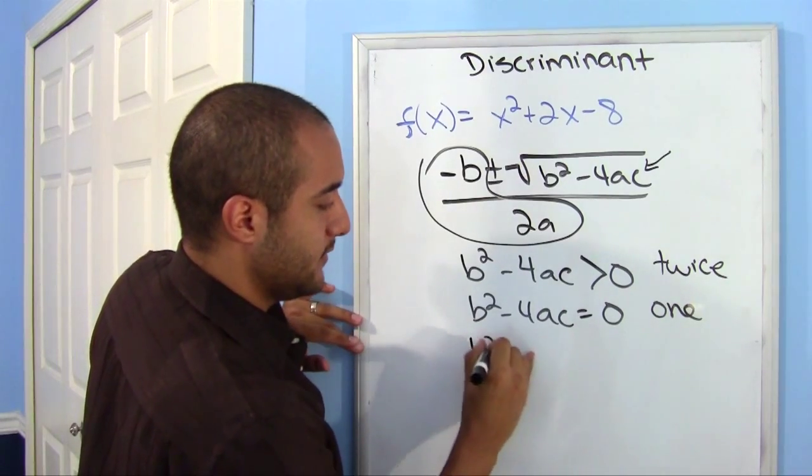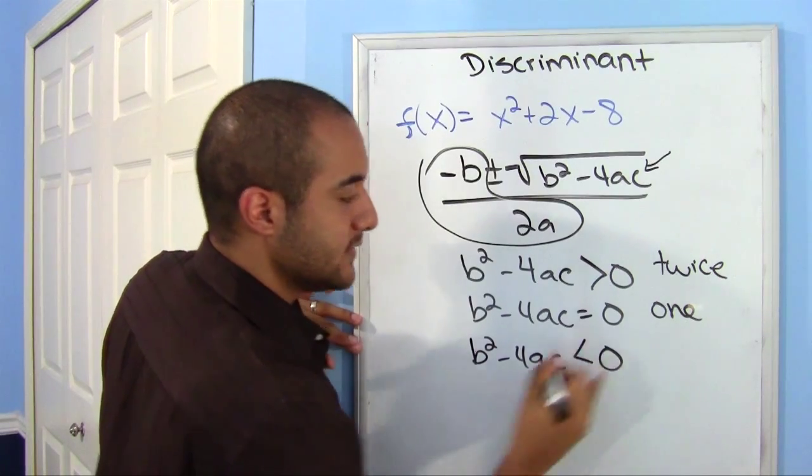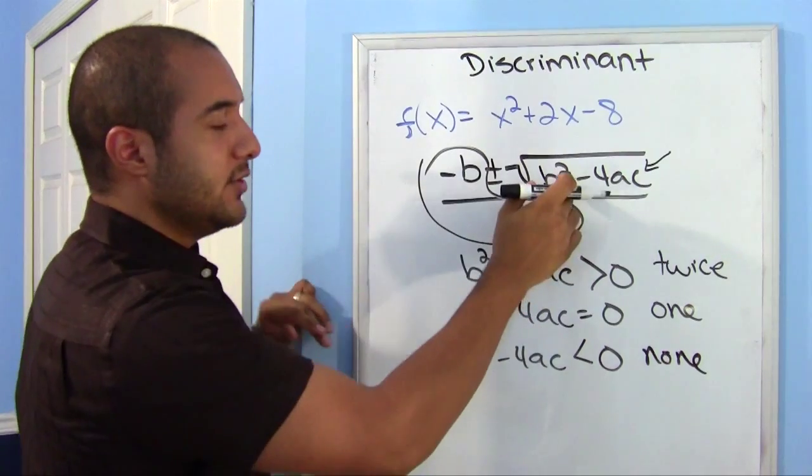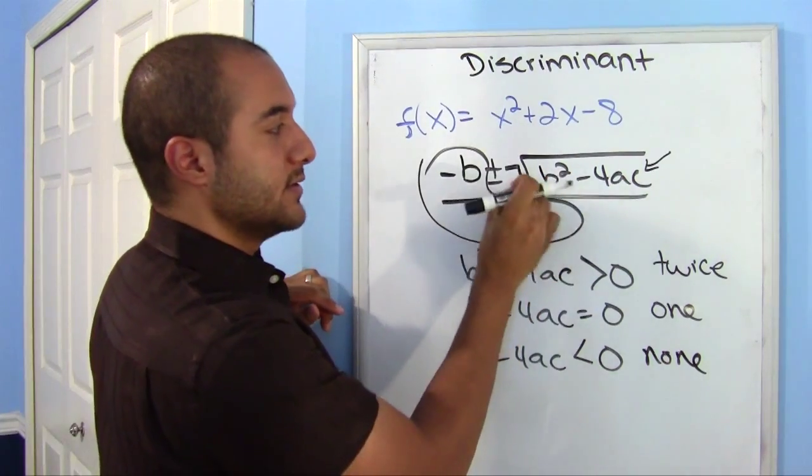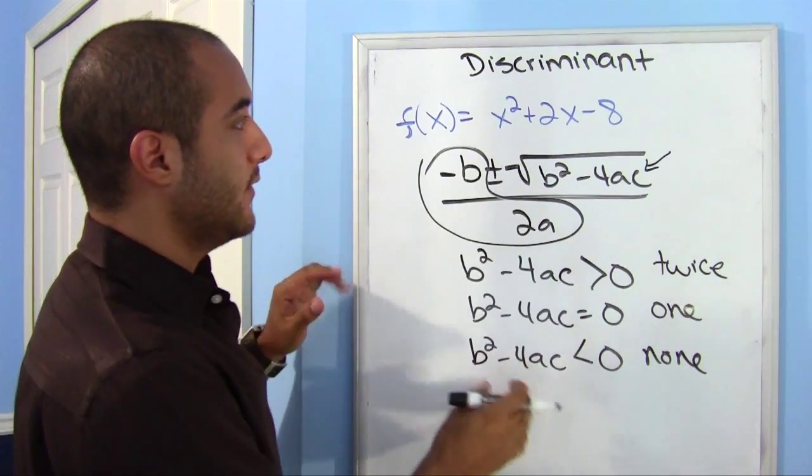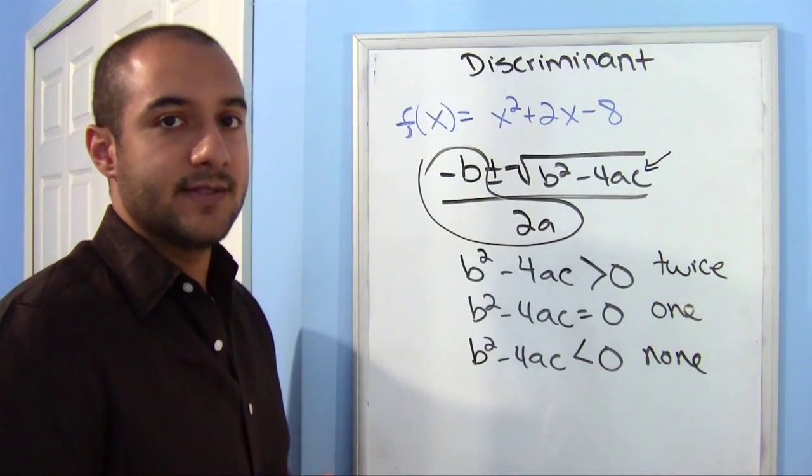And the last scenario, if this is less than 0, that means that you're going to get a negative. That means the square root of a negative number, you don't work with that. So, that lets you know that your quadratic function doesn't cross the x-axis at all.